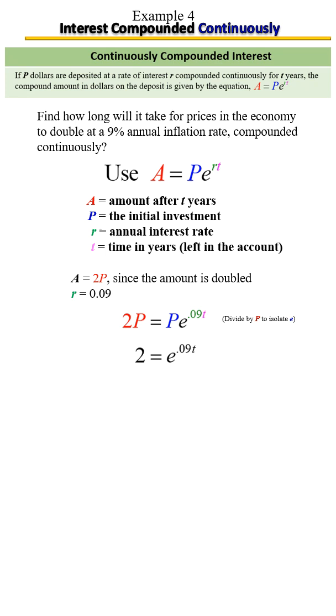Next, we're going to get rid of the e. To get rid of that, we're going to have to take the natural log of each side because ln and e cancel.